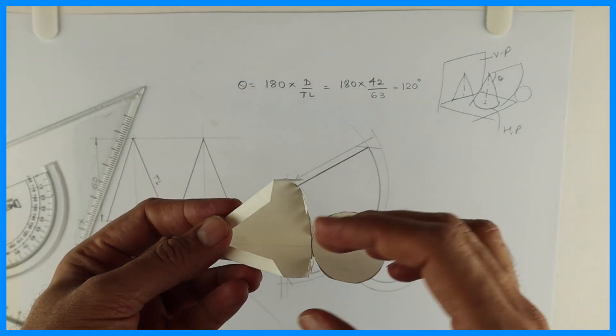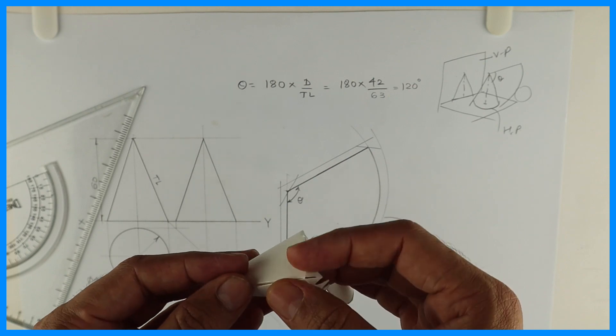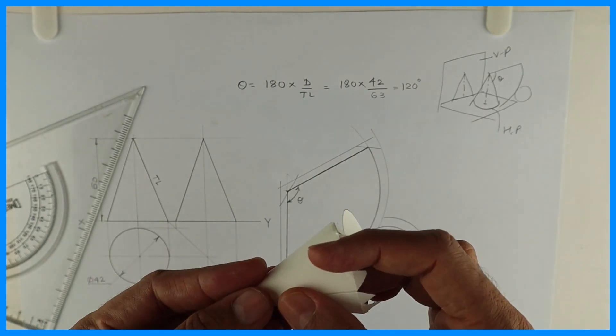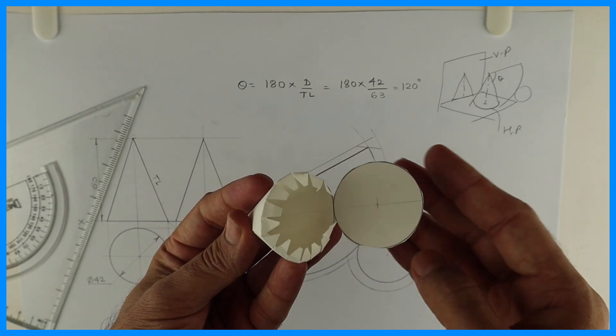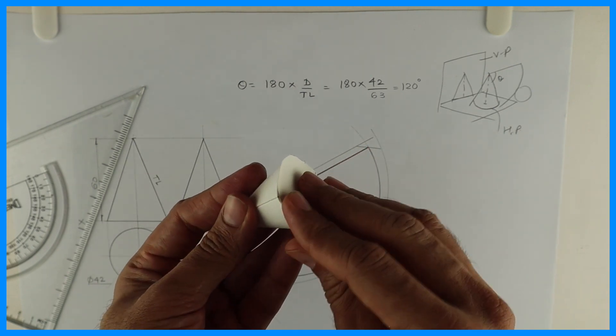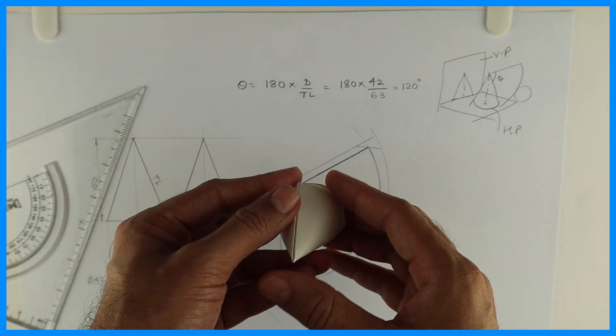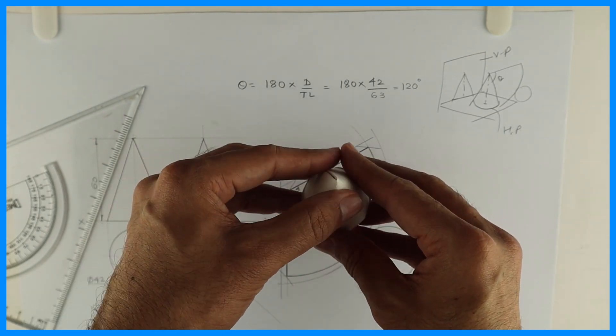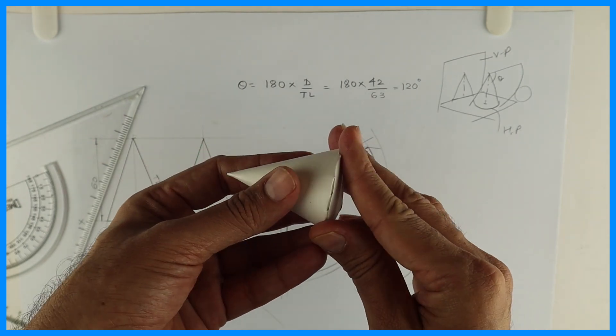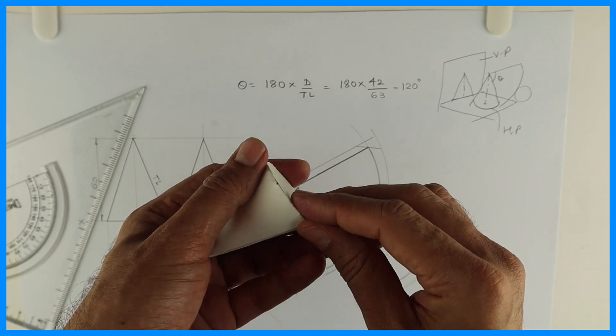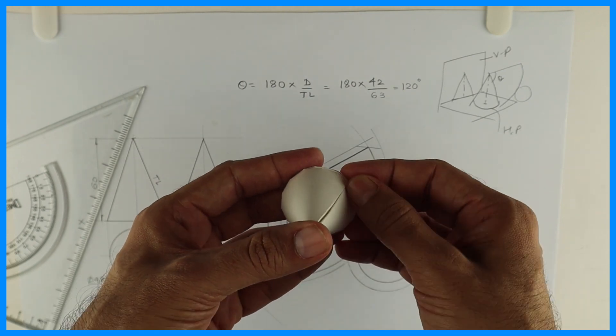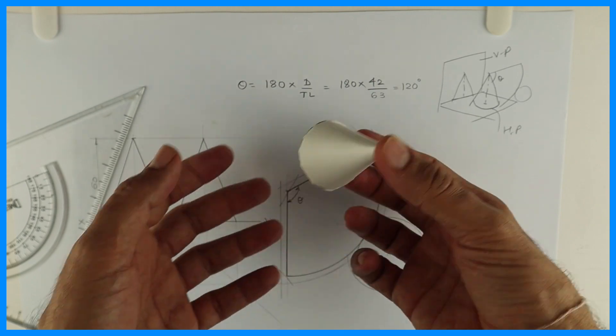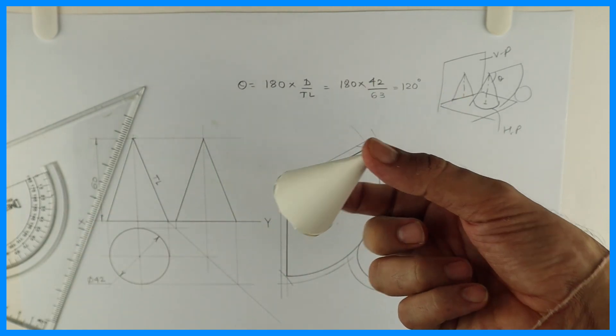See now you put gum on the extreme edges, on this side also. And you hold it like this. Then it will be like a cone. It depends upon your accuracy, how well you are cutting it and all. So this is how it will appear. See this cone.